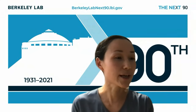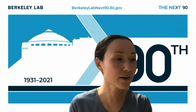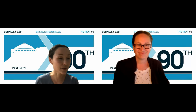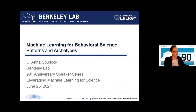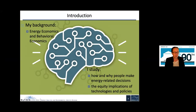My pleasure to introduce our next speaker, Anna Spurlock, from the Energy Analysis and Environmental Impact Division at Berkeley Lab. Thank you. I'm going to talk today about an application of machine learning for behavioral science or decision science. My background is in energy economics and behavioral economics, which means I study how and why people make energy-related decisions, and also the equity implications of different technologies and policies.